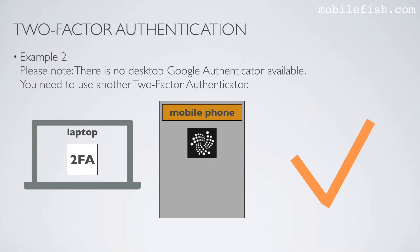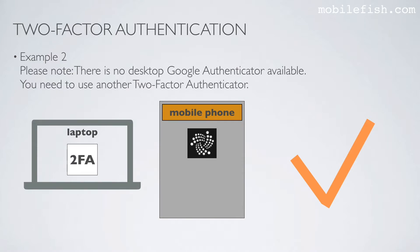Another example: install the authenticator on a laptop and your Trinity Wallet on the mobile phone. If a thief steals your mobile phone and your Trinity Wallet password, it cannot access your Trinity Wallet, because the thief also needs the laptop with the authenticator. Please note, there is no desktop Google Authenticator available, so you need to use another two-factor authenticator.